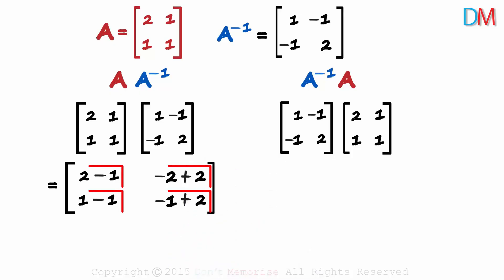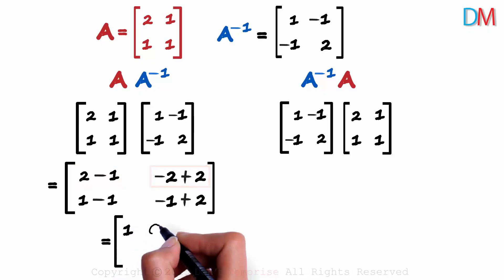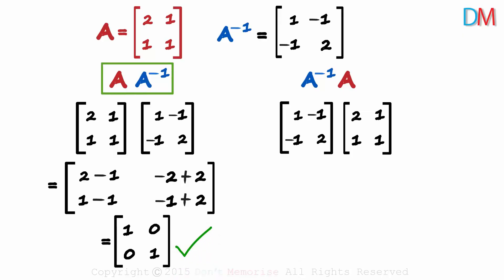Now we just calculate the four elements. 2 minus 1 is 1. Minus 2 plus 2 gives us 0. 1 minus 1 is 0. And minus 1 plus 2 equals 1. Yes we get an identity matrix. A times A inverse gives us the identity matrix.